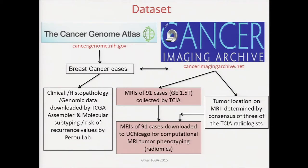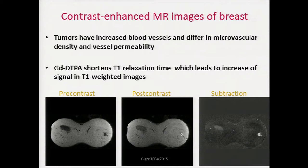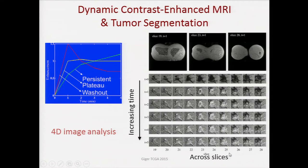From these cases, we downloaded the breast MRI images and did computational image analysis phenotyping. Since tumors have increased blood vessels and differ in microvascular density and vessel permeability, we can obtain MR images over time after injection of a gadolinium contrast agent. Here we have a pre-contrast, a post-contrast, and a subtraction, and you can see the tumor is highlighted. We do this analysis in 4D — as we inject the contrast, we continue to image and obtain data in 3D. We're interested in looking at the uptake: if uptake is quick and washout is quick, chances are it's a cancerous lesion, whereas others might be more persistent or plateau.